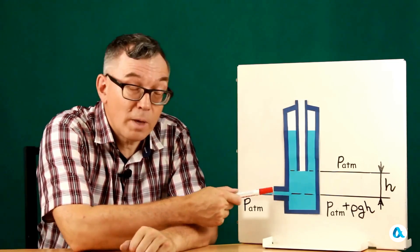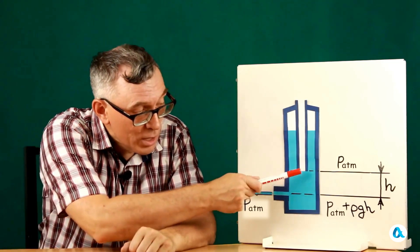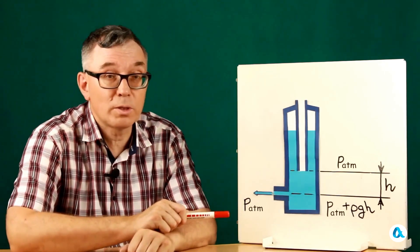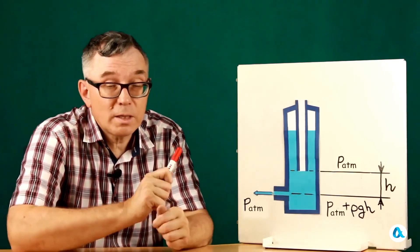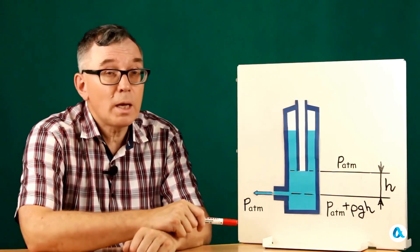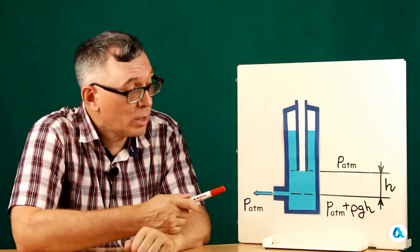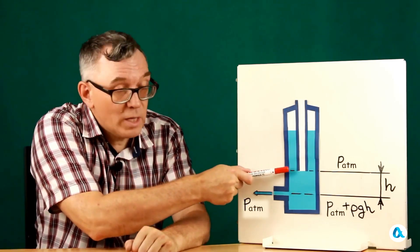And at the level of the outlet pipe, the pressure is higher than atmospheric, by the amount ρgh, where h is the difference between these two levels. And this means that the speed of water flow from the tube is determined only by this pressure difference and does not depend on the upper water level in the vessel as long as this level does not reach the lower edge of the tube.